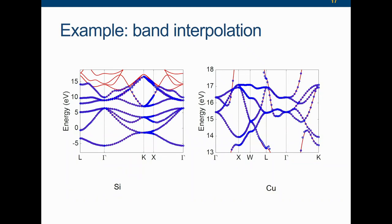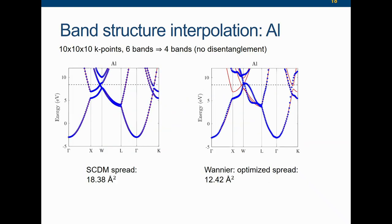Here are some examples. This is the band structure interpolation obtained solely by SCDM — one trick — and you can see it interpolates the band very well. This is benchmarked with the result obtained from Quantum Espresso. This is for case one: the full valence band and part of the conduction band. This is case two for copper — you can see it nicely selects out the d orbitals in the middle of the spectrum.